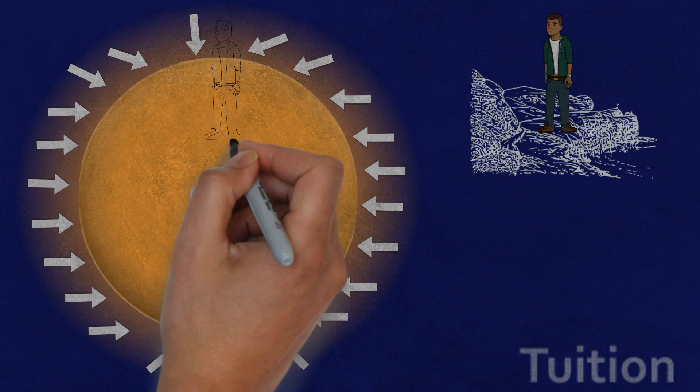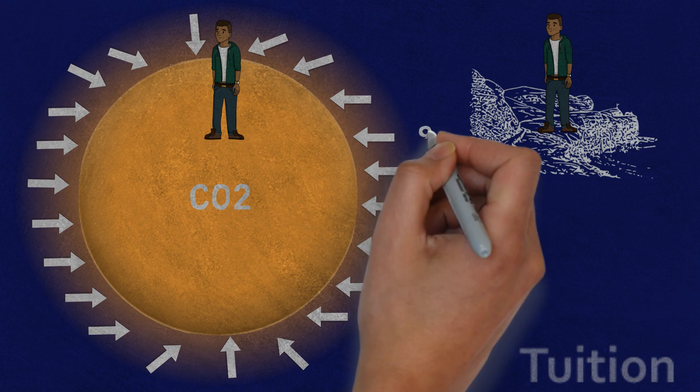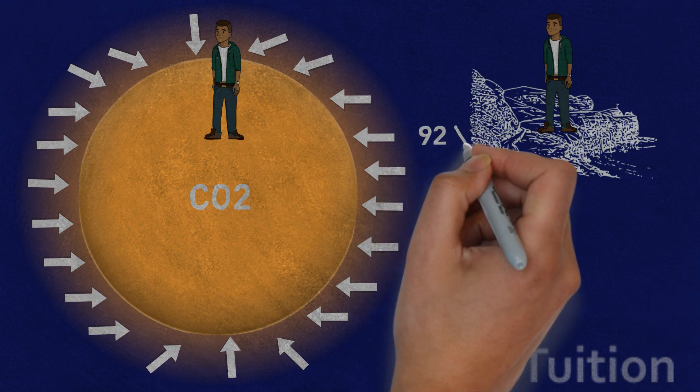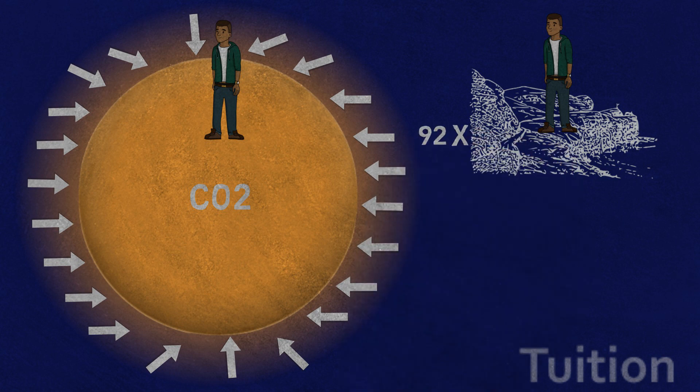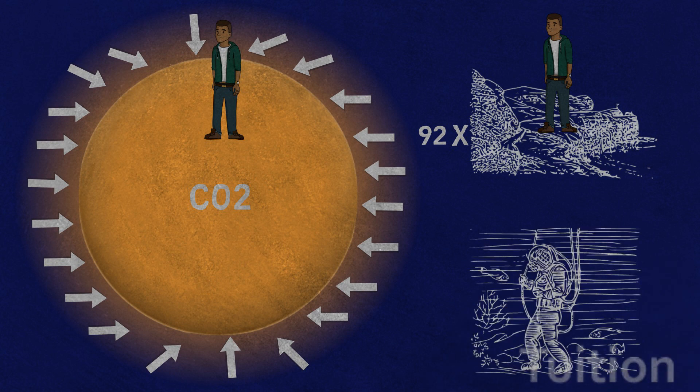But if we could stand on the surface of Venus, trust me, you don't want to, you would experience 92 times as much atmospheric pressure. This is the same kind of pressure as being a kilometer underneath the surface of the ocean.